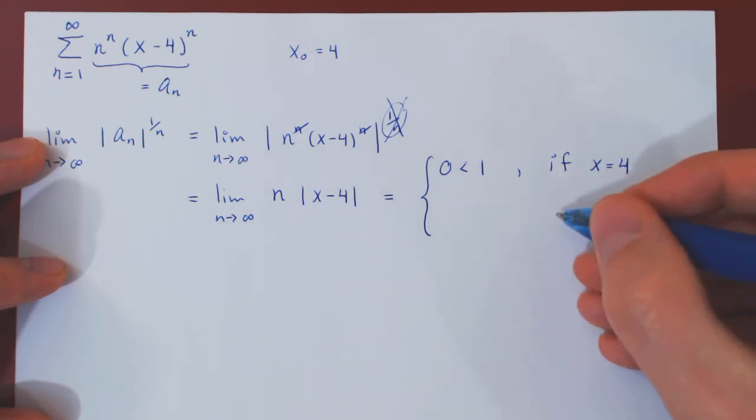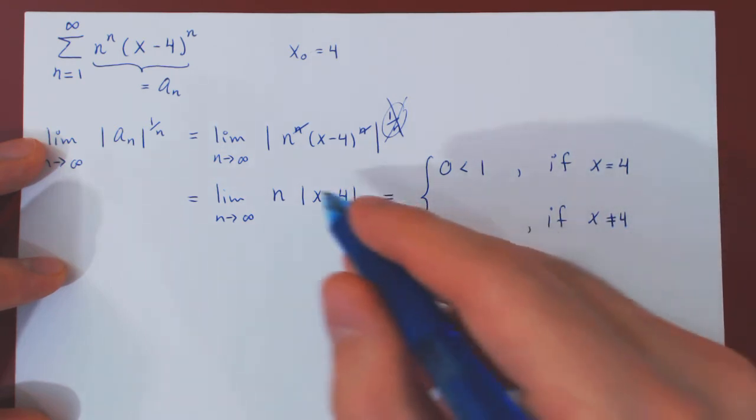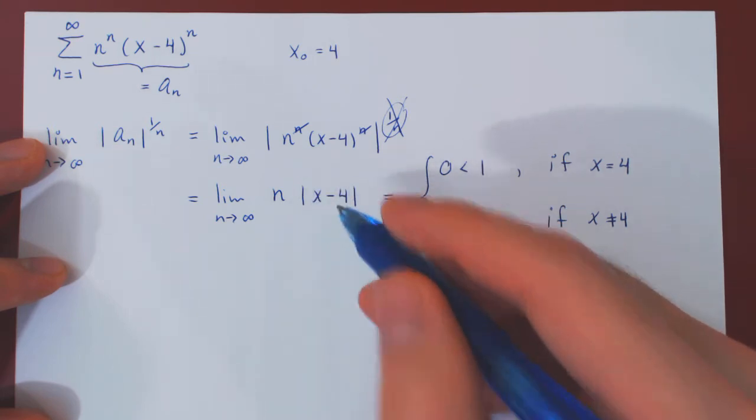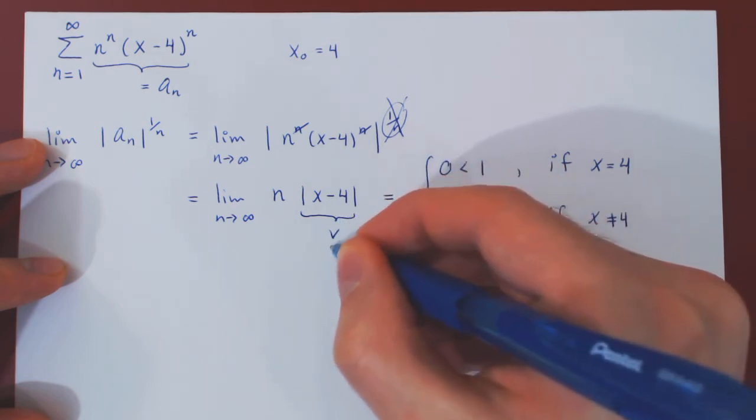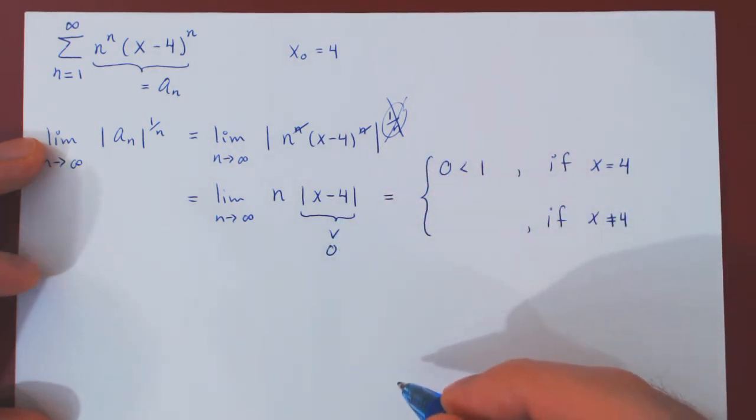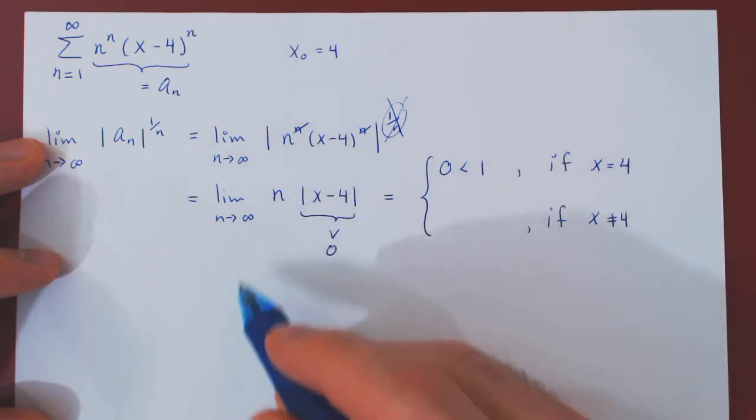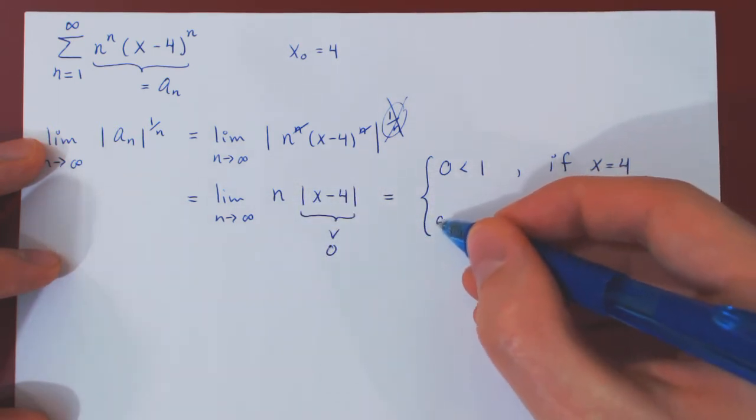But what if x is not equal to 4? Well, if x is not equal to 4, and x minus 4 is not zero, and so we have the absolute value of something which is non-zero. So the result will be a strictly positive value. But then the limit is quite different. We have a positive multiple of n, and we're letting n tend to infinity. So clearly,